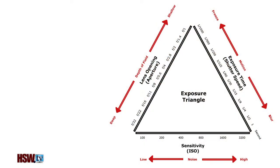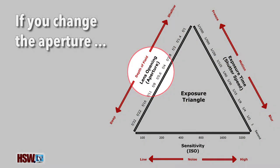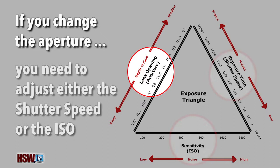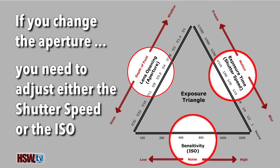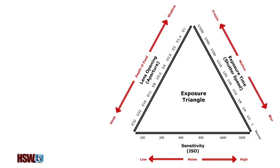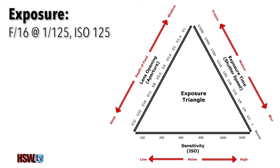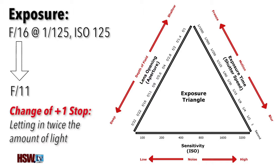It's like balancing a scale. If you adjust the aperture, it will change the exposure and you will need to select either the shutter speed or ISO to make up the difference. For example, if the Sunny 16 exposure is f-16 at 1/125th of a second, and we had to change the aperture to f-11, we opened up one stop, meaning we let in twice the amount of light.